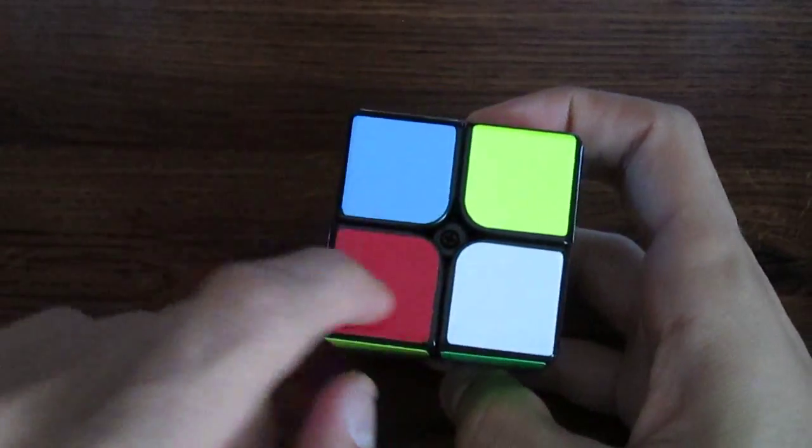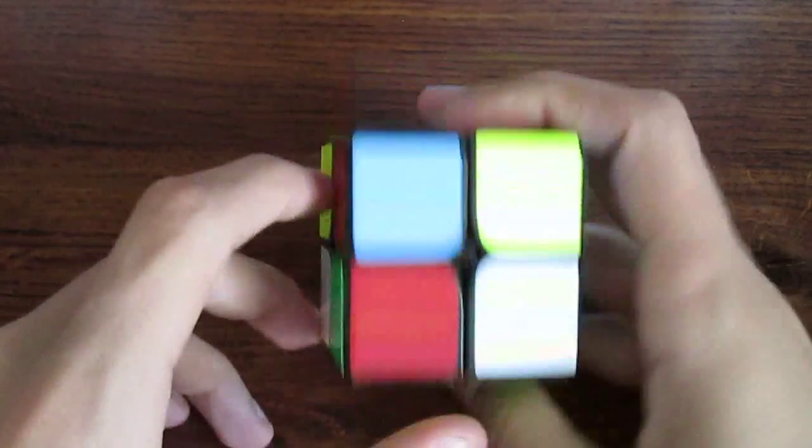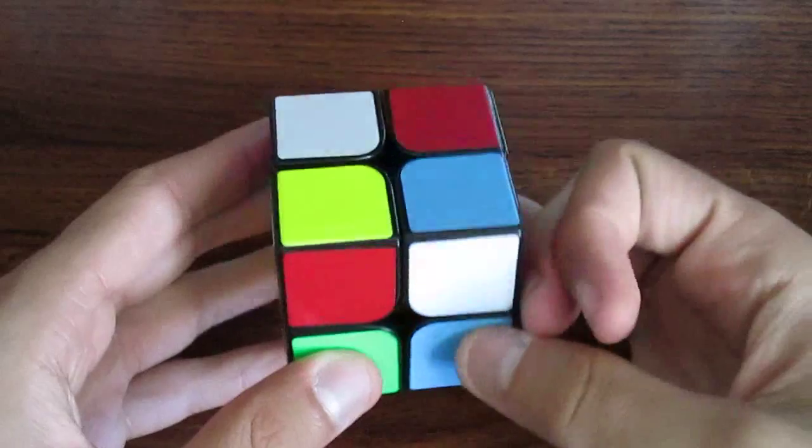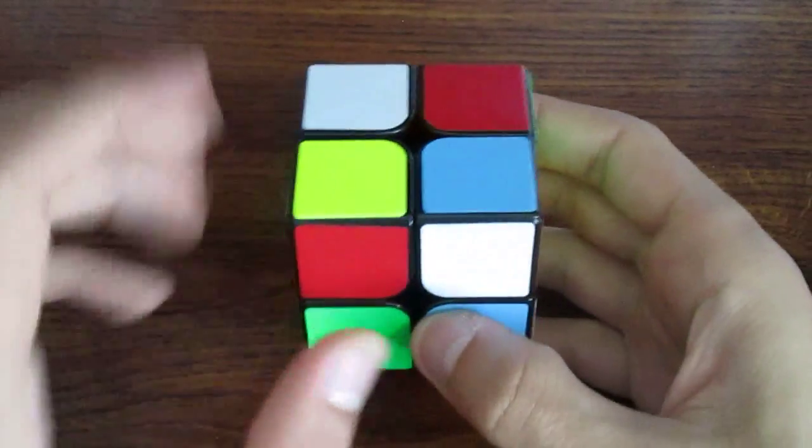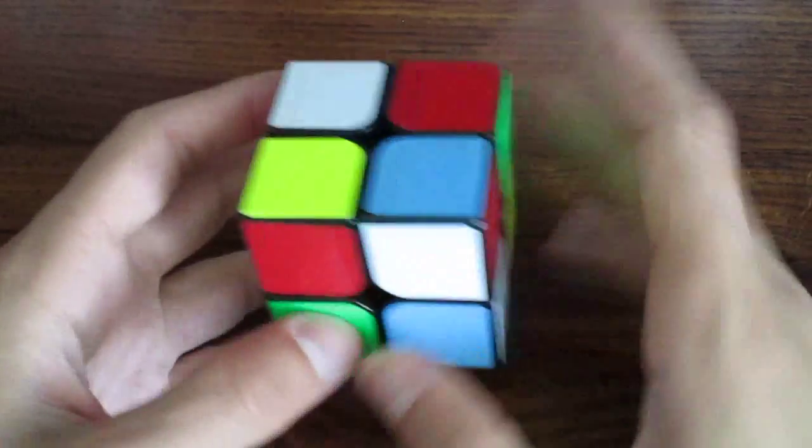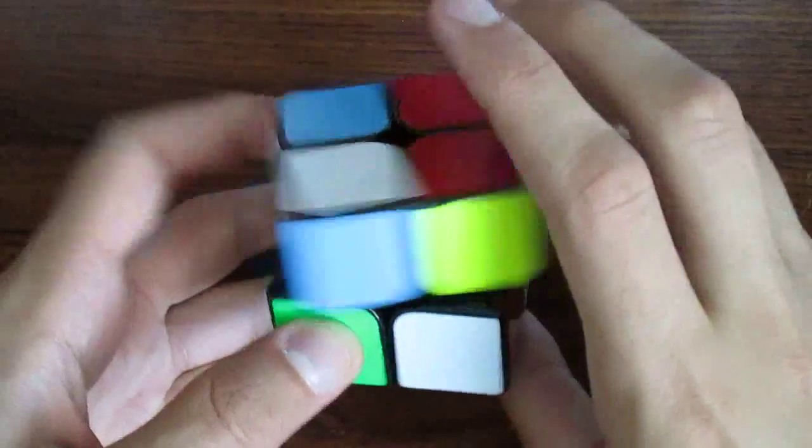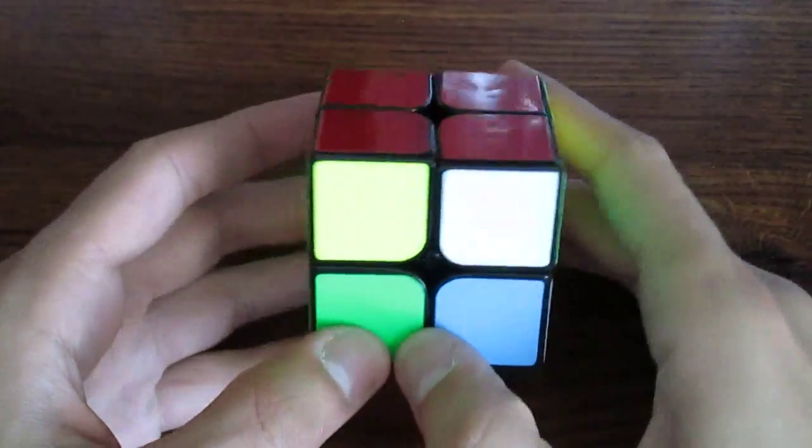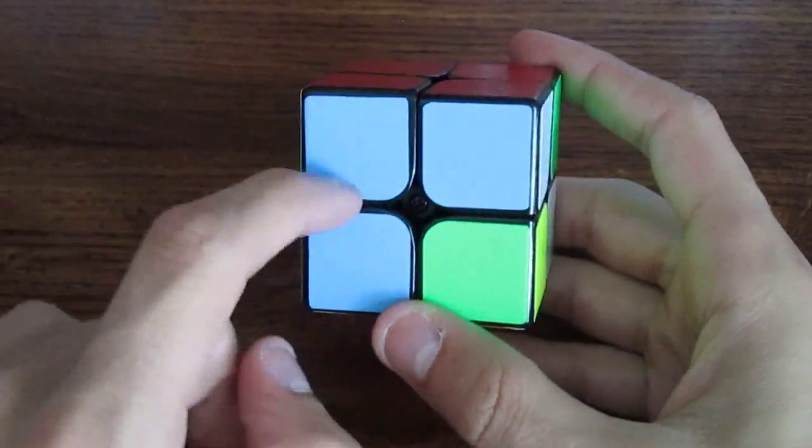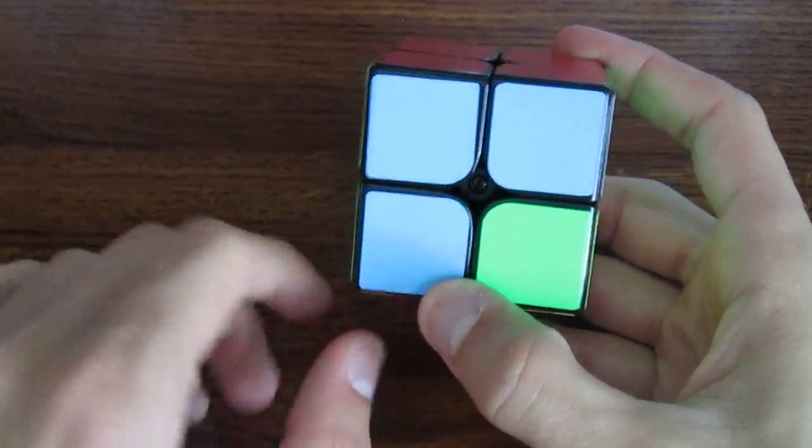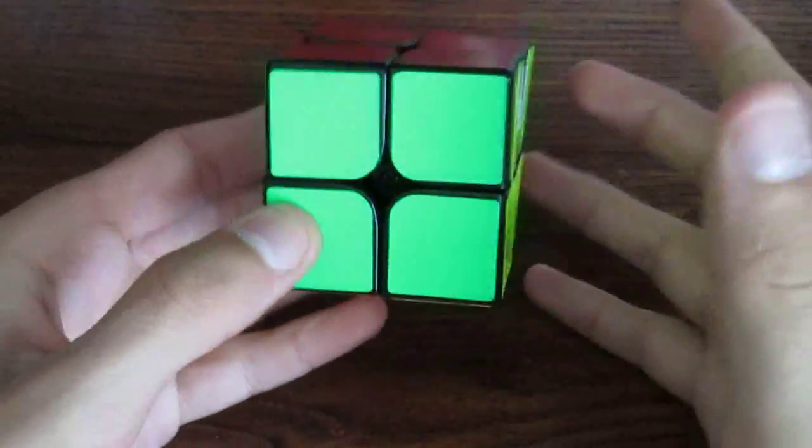Then we have our OLL case. We have one right here and one like that. And the next one's right here. So I know that it's this case. So if you have one right here, one facing out on the right, and one right here, you automatically know that it is the inverse of the one that we did earlier. Then let's scan the puzzle. And we have this case again. So let's go ahead and perform that algorithm. And then we're done.